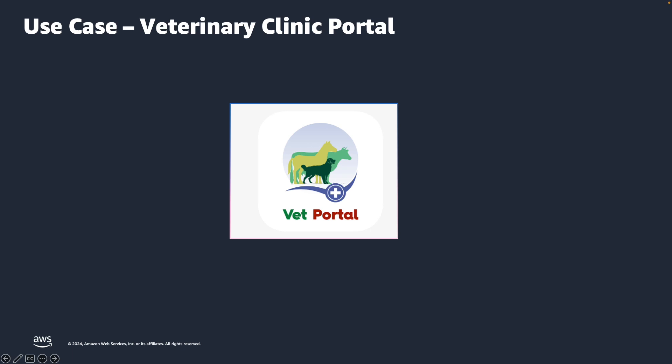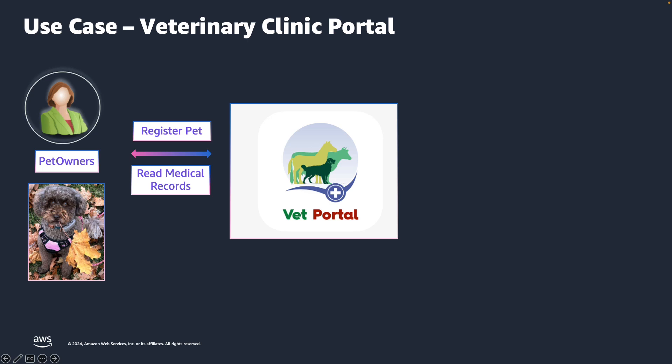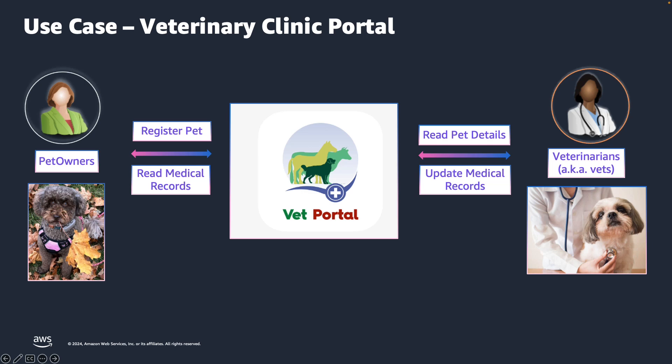We want to build a portal for a veterinary clinic. This portal allows pet owners to register their pets, create appointments with vets, and provides them with the ability to read their pet's medical records and test results. This portal is not just for pet owners — vets are also able to log into this portal. Vets can read the details about the pets and also update the medical records and any test results that were conducted. There are multiple levels of authorization needed in this case, but creating authorization becomes simpler when we follow a framework for designing and implementing authorization in our application.